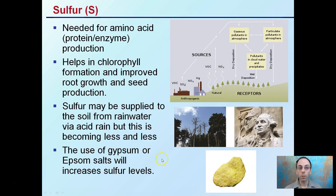Lastly, we have sulfur. It's needed for amino acid, protein, and enzyme production — keep in mind amino acids make up proteins, and proteins are a general category for enzymes. Sulfur also helps with chlorophyll formation and improves root growth and seed production.